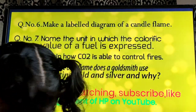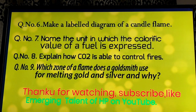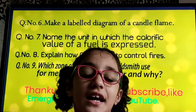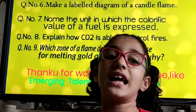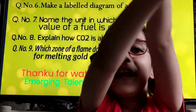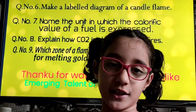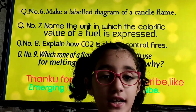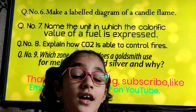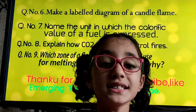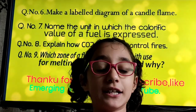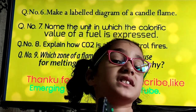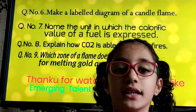Question Number 8: Explain how CO2 is able to control fires. As CO2 is heavier than oxygen, it forms a blanket around the fire, because of which the supply of air is stopped. Moreover, it brings down the ignition temperature of the substance. In these ways, it plays a significant role in controlling a fire.